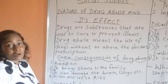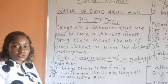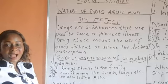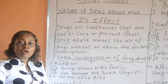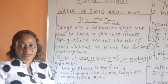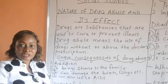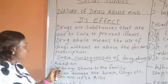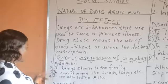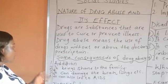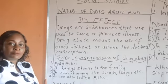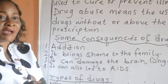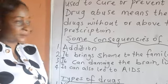What are the consequences of drug abuse? Number one: addiction. Addiction means a continuous hunger for a particular thing, something you cannot do without. When somebody is abusing drugs, taking drugs every time, there will come a time that the person can no longer stay without that drug — the person becomes addicted to it. Number two: it brings shame to the family. When somebody is abusing drugs, the person will start to misbehave, lose their senses, behave in a very bad way, and can end up bringing shame to the family.